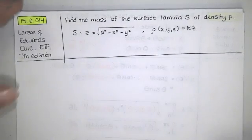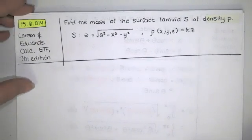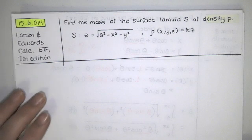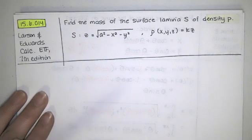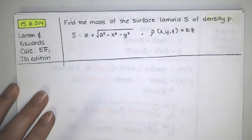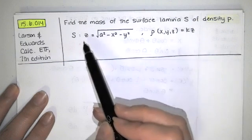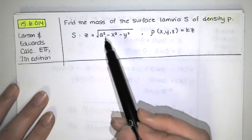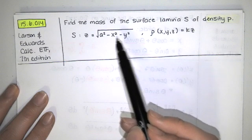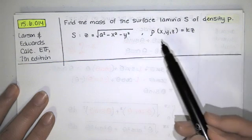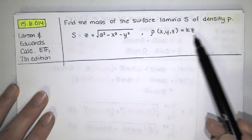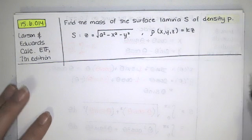In this video we solve problem 15.6.014 from the Larson and Edwards Calculus Early Transcendental Functions text, 7th edition. We're asked to find the mass of the surface lamina s of density rho, where s is given by z equals the square root of a squared minus x squared minus y squared, and rho is a function of x, y, and z which turns out to be a constant k times z.